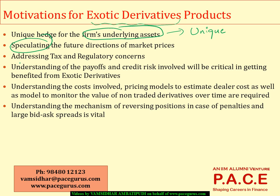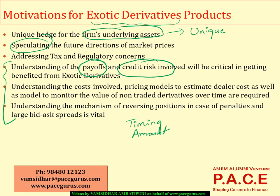Some of the things every organization has to comfortably understand include having a thorough understanding of the payoffs — both the timing and the amount of payoffs. Also understand the credit risk involved, because these are not exchange-traded contracts. Based on that, do the pricing carefully, because generally you are taking more risk and so you have to be compensated with more benefit. The risk-adjusted return determination can only be done if you understand the payoffs as well as the credit risk involved in these transactions.